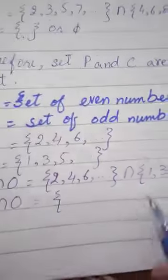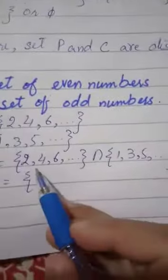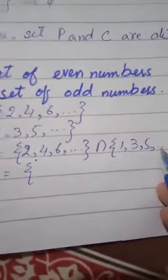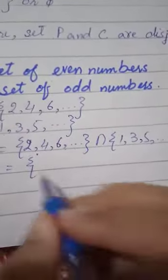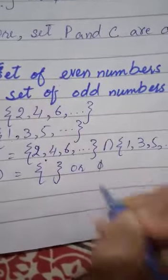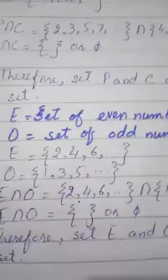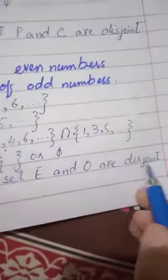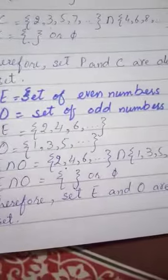If you are to find them, even numbers and odd numbers, there is no common element in it. So this will be empty set or phi set. Therefore, set E and O are disjoint sets, meaning that there is no common element.